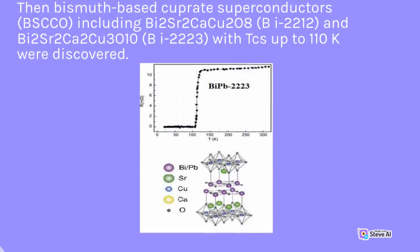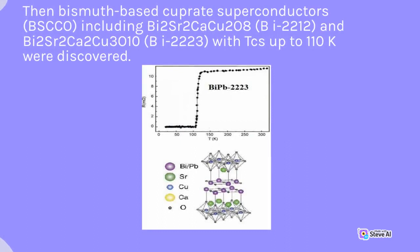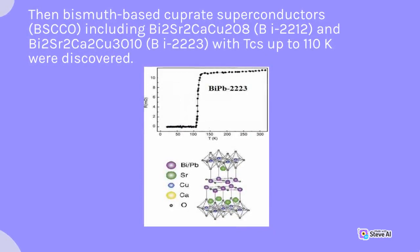Then, bismuth-based cuprate superconductors (BISCO), including Bi-2Sr2-CaCu2O8 (Bi-2212) and Bi-2Sr2-Ca2Cu3O10 (Bi-2223), with Tc's up to 110 K, were discovered.